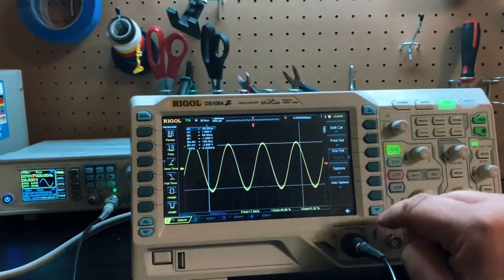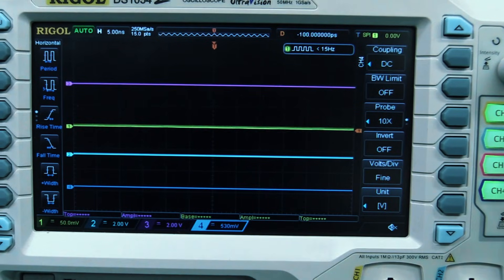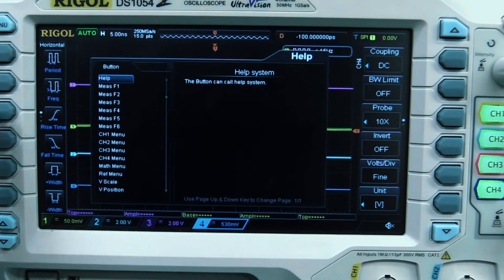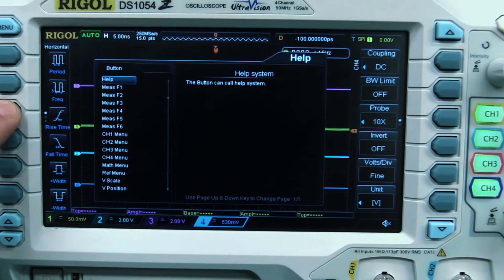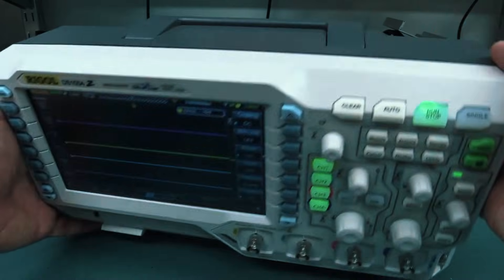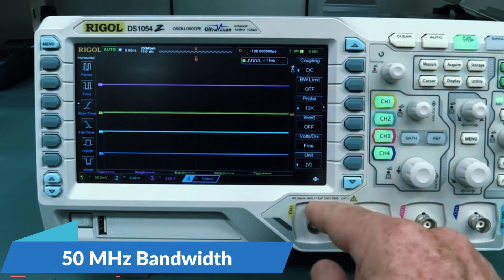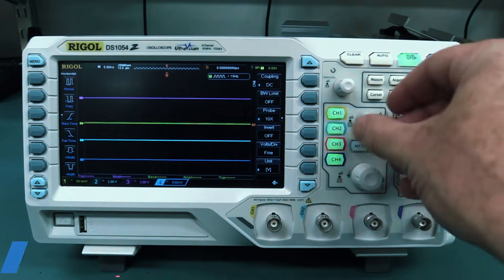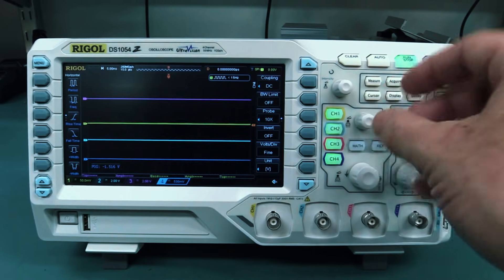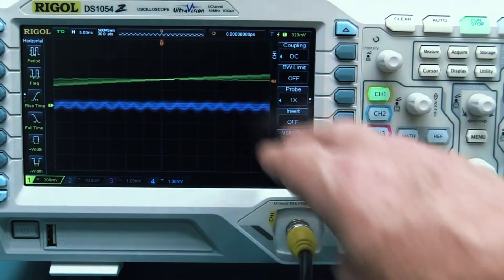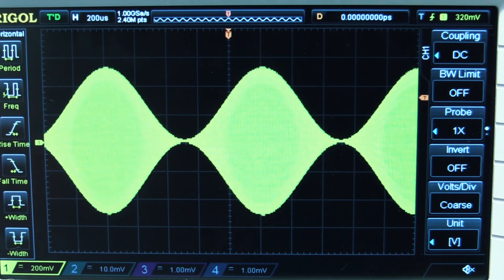Right out of the box, the DS1054Z comes with a 50MHz bandwidth. But here's the cool part: it can be hacked to unlock a full 100MHz bandwidth, turning it into an even more powerful machine. This makes it one of the most versatile oscilloscopes at this price point.